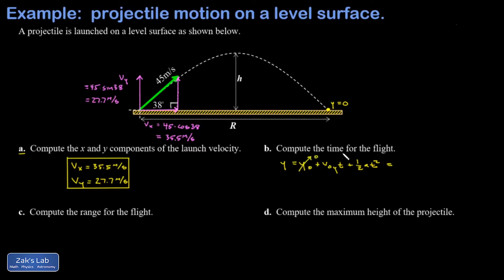I'm going to go ahead and plug in my initial y value, that was zero, and my final y value, that's also zero, in my initial y velocity, that's 27.7 meters per second, in my acceleration, that's negative 9.8. So I'm going to pull the minus sign out in front and then half of 9.8 is 4.9 t squared. Now this is a quadratic equation, but we don't require the quadratic formula.